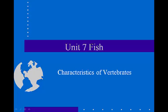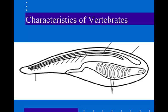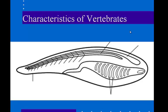Unit 7: fish. Remember, fish are vertebrates, and all vertebrates have a couple features that are in common.